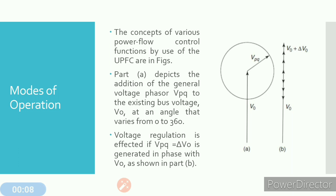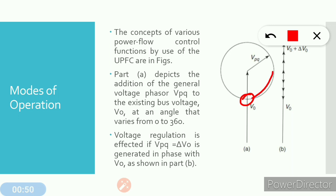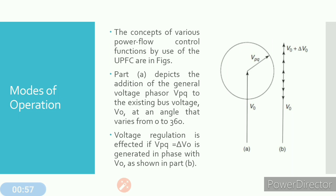The injected voltage can be varied in magnitude as well as in phase angle. Figure A shows how the voltage Vpq is injected to the existing bus voltage V0 at an angle that varies from 0 to 360 degrees. If the voltage is injected at the initial point, the phase angle of Vpq is 0 degrees, and it can be changed from 0 to 360 degrees as shown in the phasor diagram.